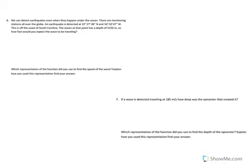The next two questions are going to ask us to make some calculations. Number six says that we can detect earthquakes when they happen under the ocean. There are monitoring stations all over the globe. An earthquake is detected at 22 degrees 27 minutes 6 seconds north and 54 degrees 2 minutes 47 seconds west. This particular measurement is a way of reading latitude and longitude on a map. It does not affect the way we solve this problem. This is off the coast of South Carolina.